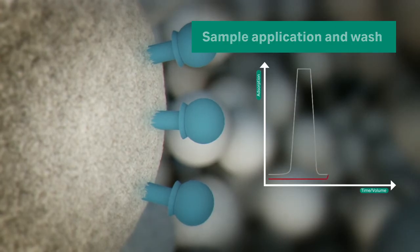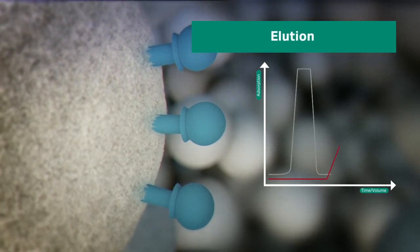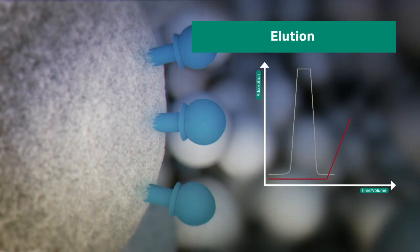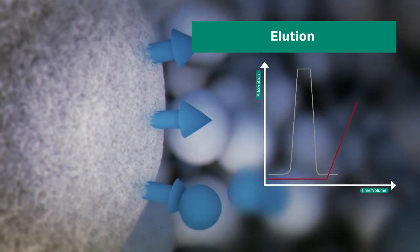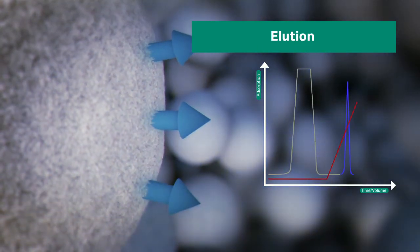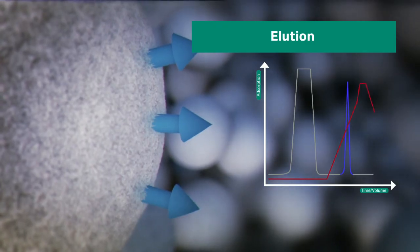In the third step, elution, biomolecules are released from the biospecific ligand into the elution buffer by change in the buffer composition. A common way is to increase pH of the buffer.